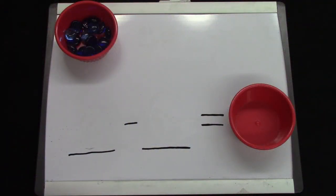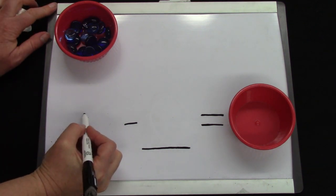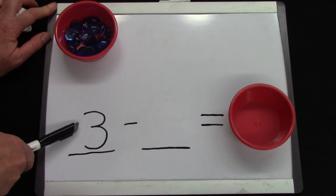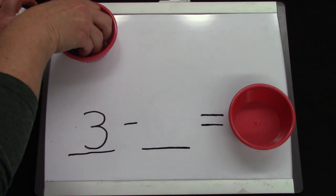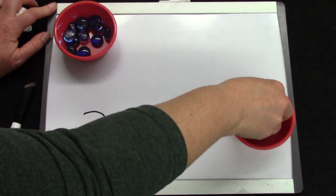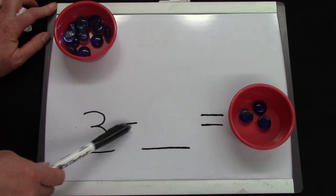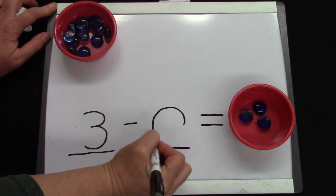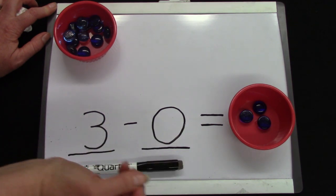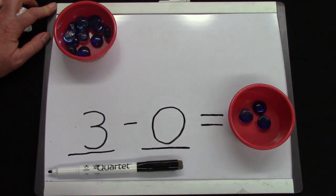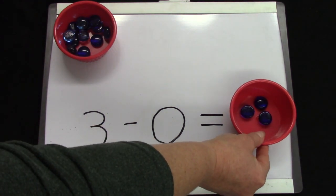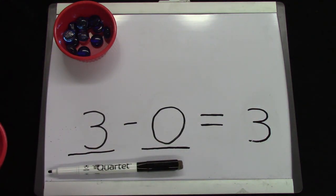Let's practice some subtraction facts. We are going to start off with the number three. And I'm going to put that on my number sentence. I'm going to get three gems. One, two, three. Three take away zero. How many do I have to take away? Nothing. Three take away zero equals? What is it? Three. Well done.